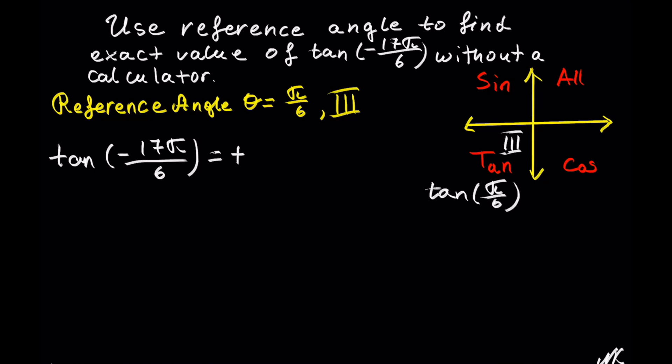If you have this value memorized, you can go ahead and answer now. However, if you don't, we can use the reference table to calculate it. We need to know that tangent of pi out of 6 is the same as tangent of 30 degrees, since pi equals 180, so 180 out of 6 is 30 degrees. So from here we just need to calculate tangent of 30 degrees.